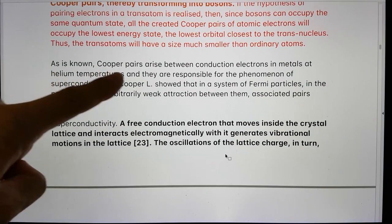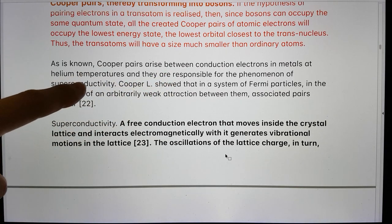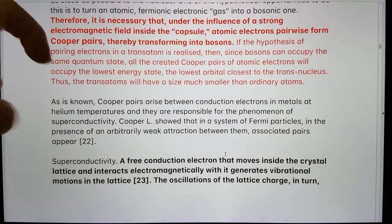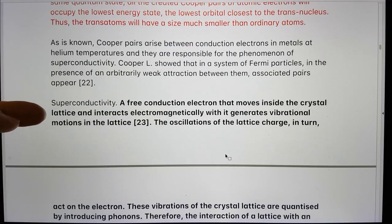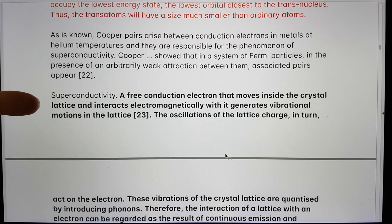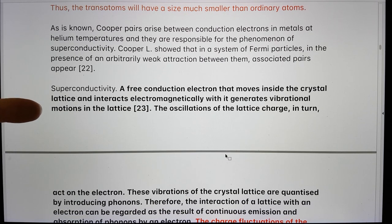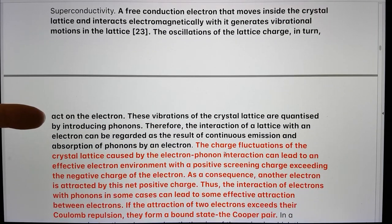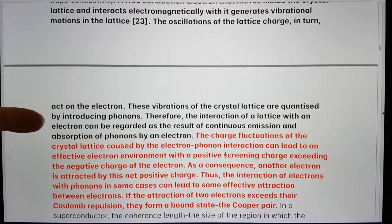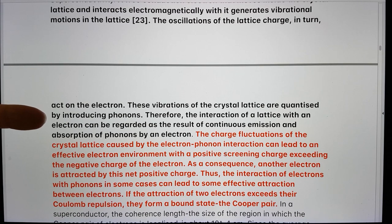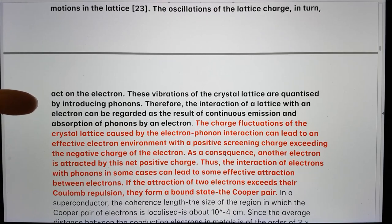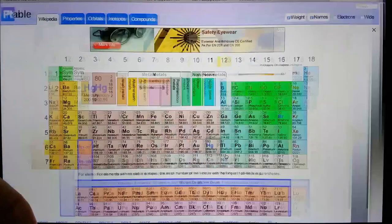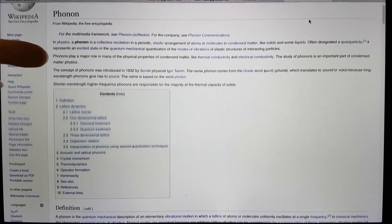Cooper pairs arise between conduction electrons in metals at helium temperatures. But we need this to happen at higher temperatures. Here we get the idea about superconductivity. A free conduction electron that moves inside a crystal lattice and interacts electromagnetically with it generates vibrational motions in the lattice. The oscillations of the lattice charge in turn act on the electron. These vibrations of the crystal lattice are quantized by introducing phonons.